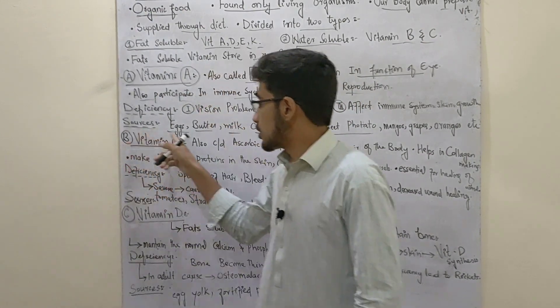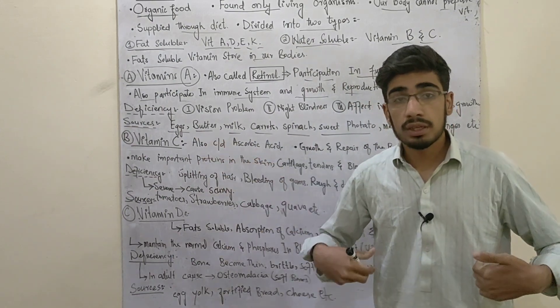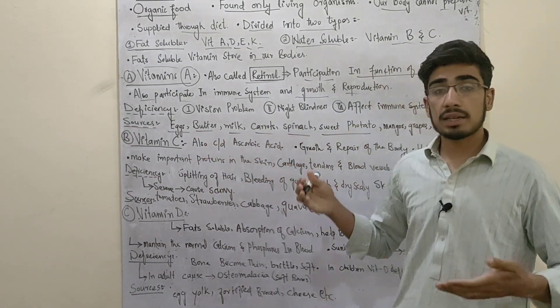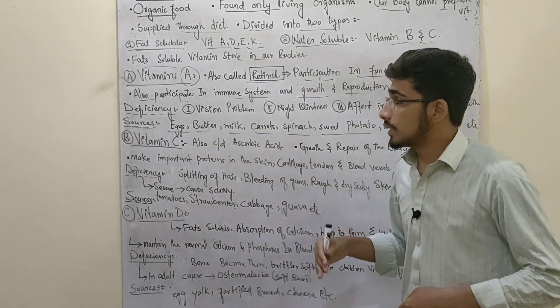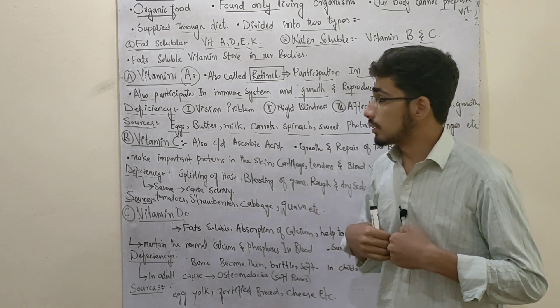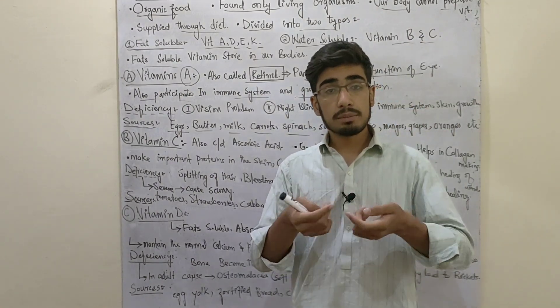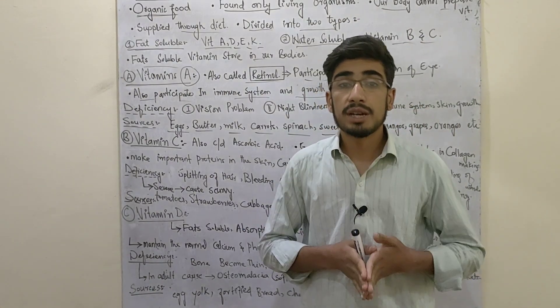You can use eggs, butter, milk, carrots, etc. as sources of vitamin A. These can help clear vitamin A deficiency.